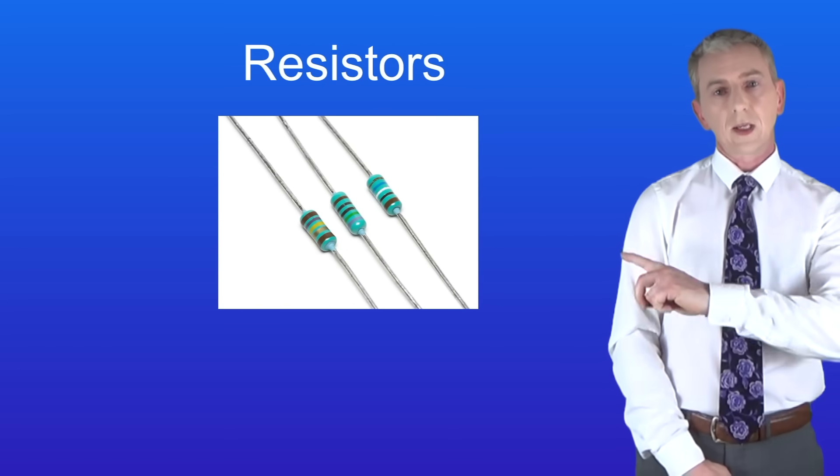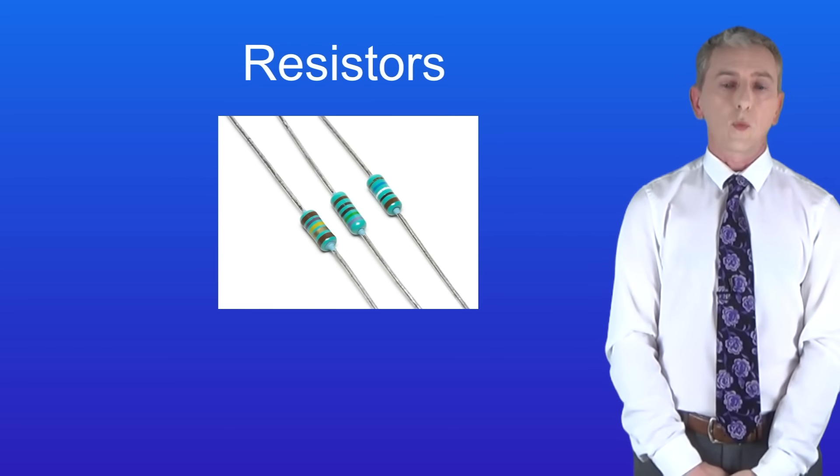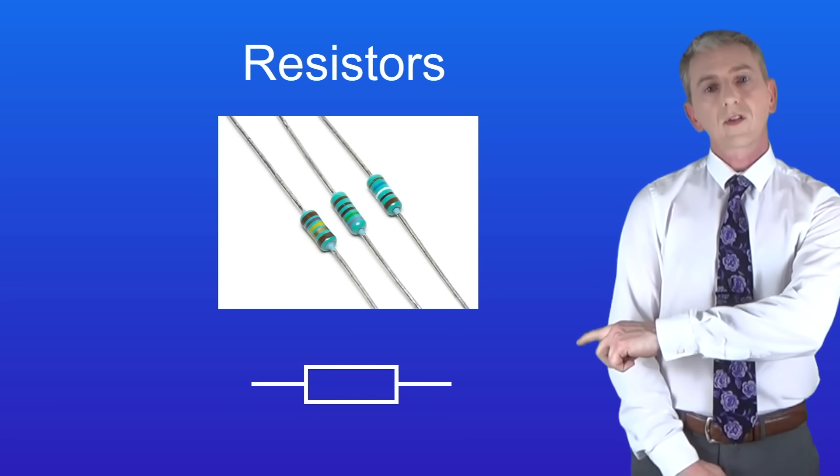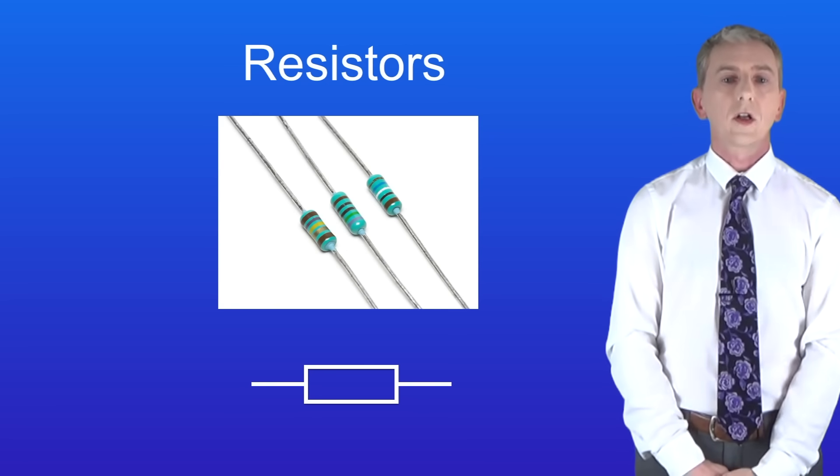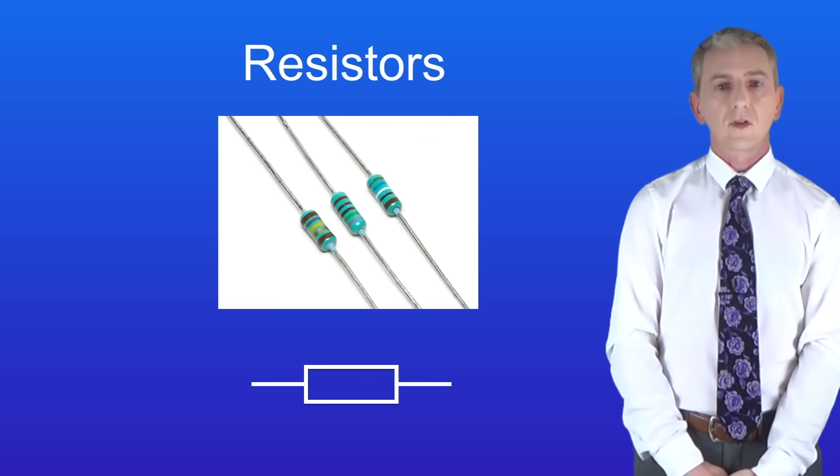I'm showing you some resistors here. We can get resistors with any resistance that we need. Here's the symbol for a resistor and you need to learn that. So why would we need to add extra resistance?